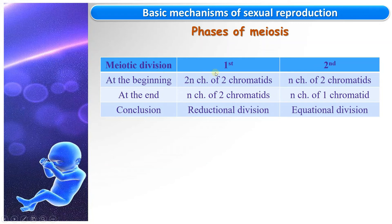At the beginning of the first meiotic division, there were 2n chromosomes of two chromatids. At the end of it, there were n chromosomes of two chromatids, so the number of chromosomes decreased — reduced from 2n to n — and for this reason the first meiotic division is qualified as reductional. At the beginning of the second meiotic division, there were n chromosomes of two chromatids, and at the end there were n chromosomes of one chromatid, meaning the number of chromosomes remains constant. For this reason, the second meiotic division is qualified as equational.